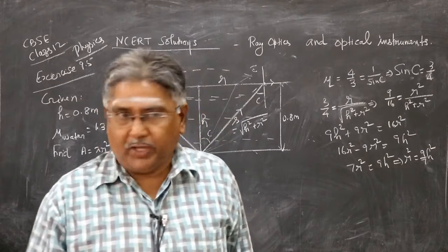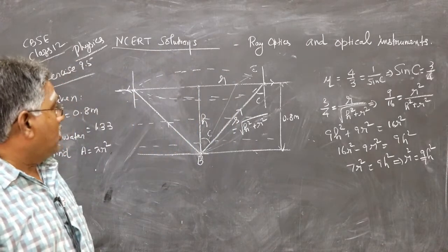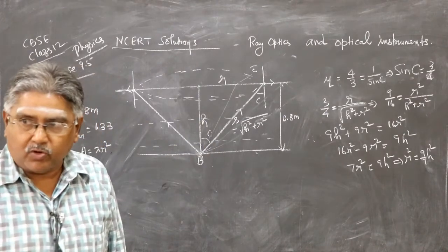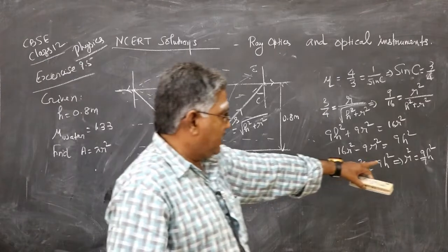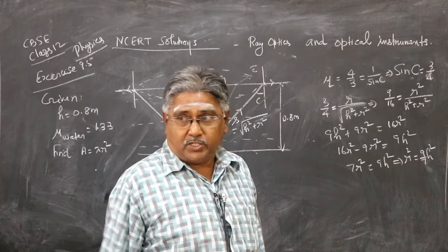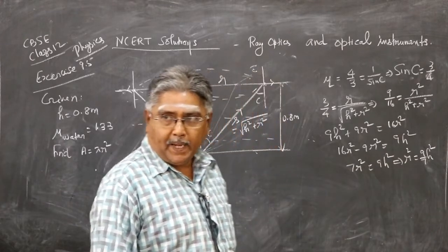Of course, it is not a big thing, but still I am saying if you want any perfection in the diagram, you draw R to be greater than H. Because you see here, R is greater than H. R is 9 by 7 times root 9 by 7 times H, or R squared is 9 by 7 times H squared.